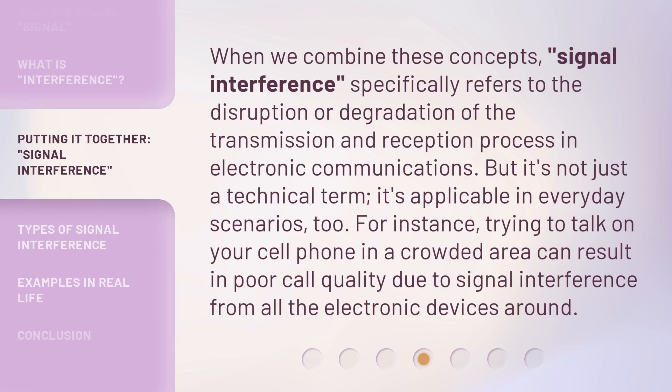When we combine these concepts, signal interference specifically refers to the disruption or degradation of the transmission and reception process in electronic communications. But it's not just a technical term — it's applicable in everyday scenarios too. For instance, trying to talk on your cell phone in a crowded area can result in poor call quality due to signal interference from all the electronic devices around.